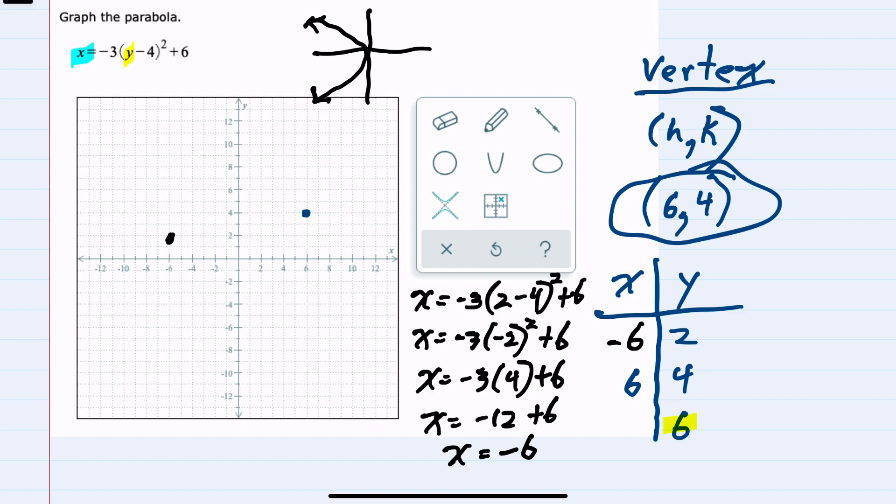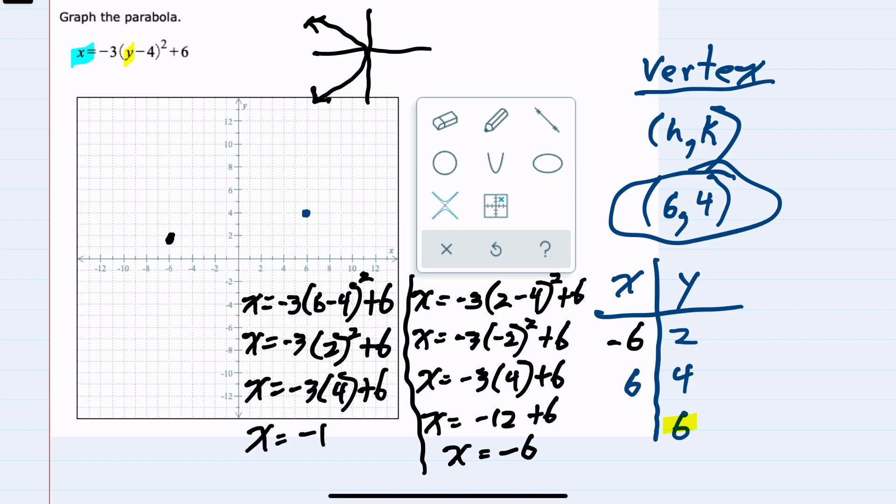And then if I plug in the second y value, which is 6, I would get x equals negative 3 times y is now 6 minus 4 squared plus 6. So x equals negative 3 times a positive 2 squared plus 6. x equals negative 3 times 4 plus 6. x equals negative 12 plus 6. x again equals negative 6. So we have the point negative 6, 6 as well. This is saying that x is negative 6 when y is 6.